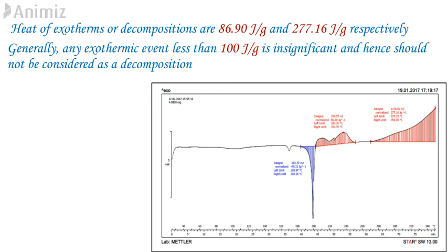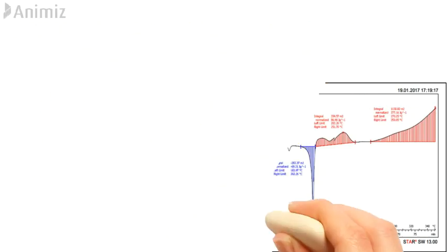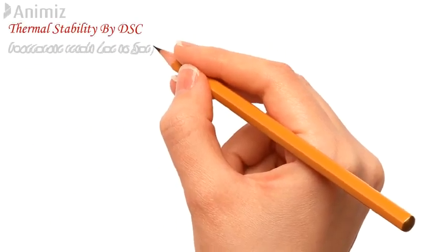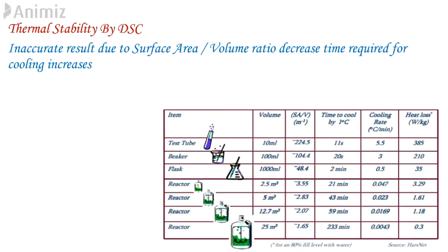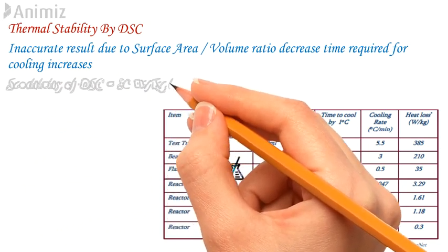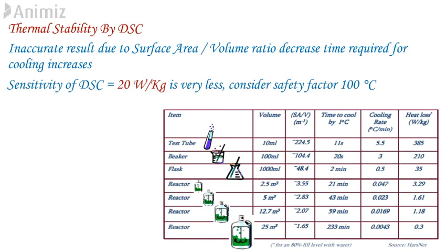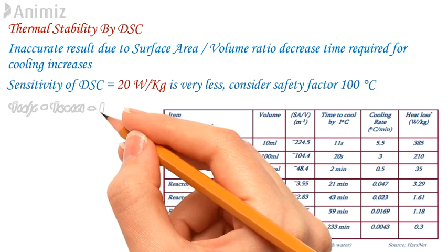From DSC, gas evolution data cannot be generated. A very small sample size is considered while performing DSC experiments. Hence the result obtained from it may not be accurate. It is because as the scale increases, the surface area to volume ratio decreases and accordingly time required for cooling also increases drastically. Typically, the sensitivity of DSC is considered to be 20 Watt per kg, which is very less. To overcome this, a safety factor of 100 degree Celsius is widely used. A correlation between safe operating temperature and onset temperature can be based on Stoessel book.